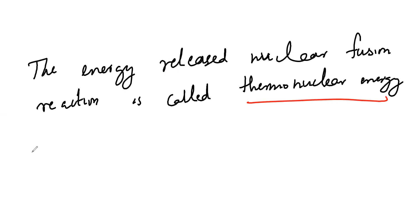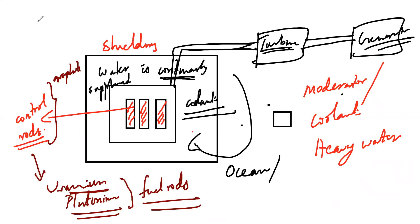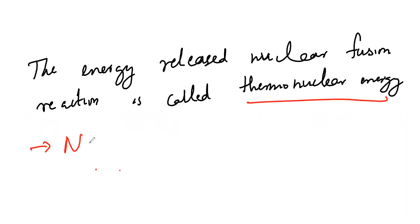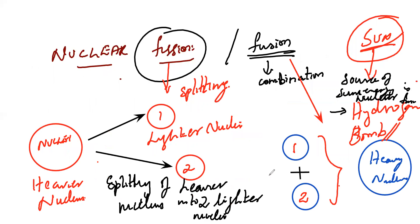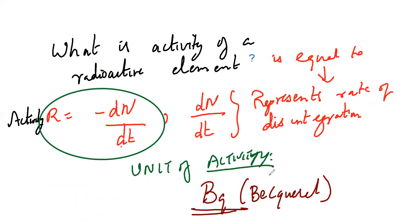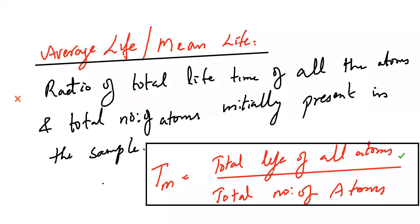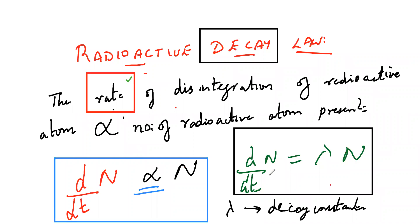In nuclear fission, fast-moving neutrons are mainly used; in fusion, protons are mainly used. Study each topic in a diagrammatic way — it will be very easy to remember. Rate means d by dt, so differentiation should be used immediately.